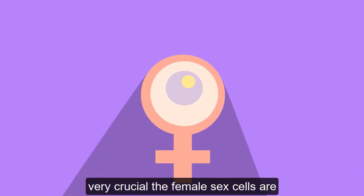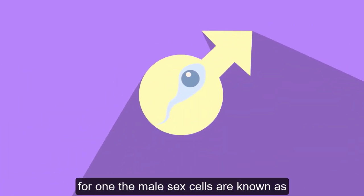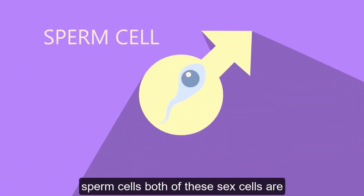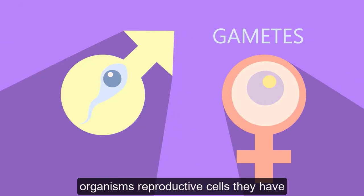The female sex cells are known as the ova or egg cells or ovum for one. The male sex cells are known as sperm cells. Both of these sex cells are known as gametes. Gametes are an organism's reproductive cells.